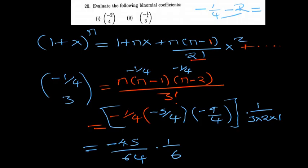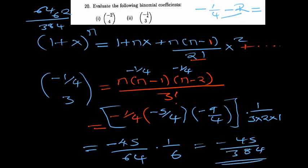So we can just go on and multiply 64 by 6. 4 × 6 is 24. 6 × 6 is 36, plus 2, that's 38. So 384. Negative 45 over 384. That's where I can end for this coefficient.